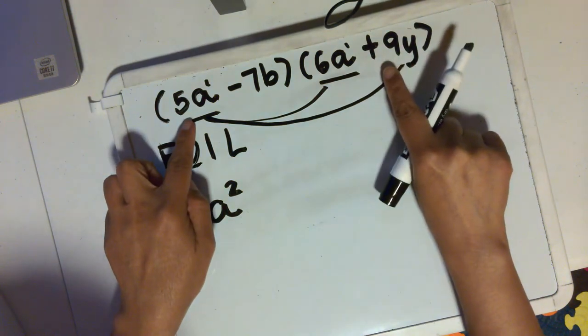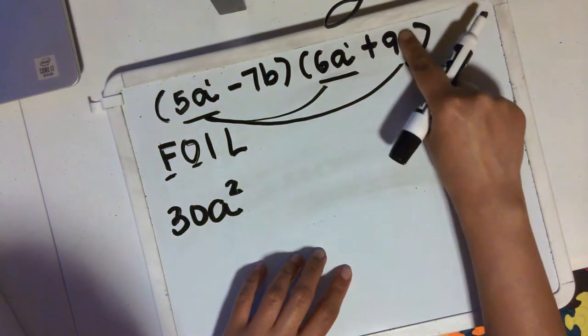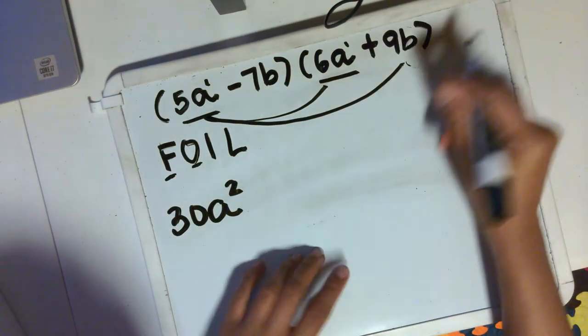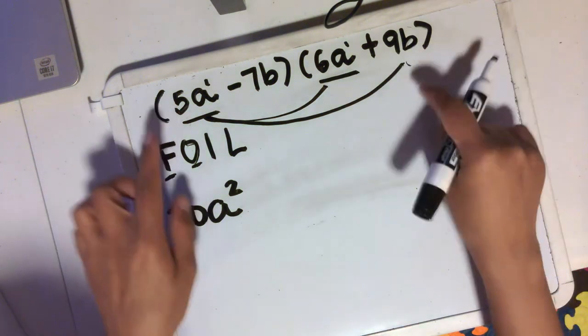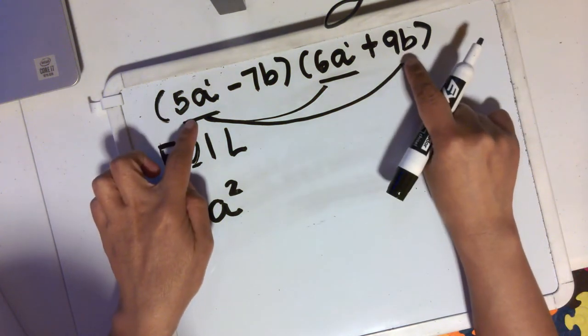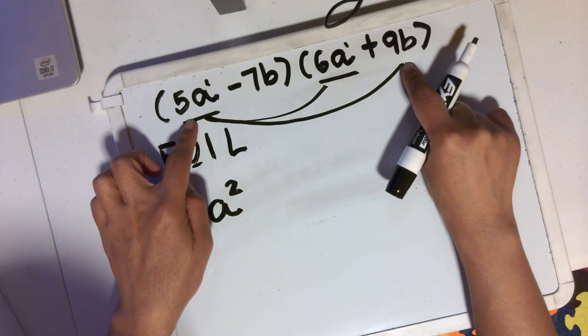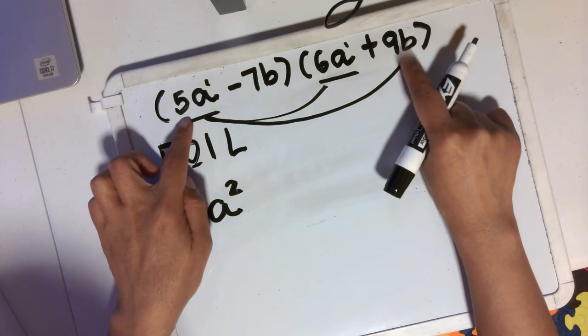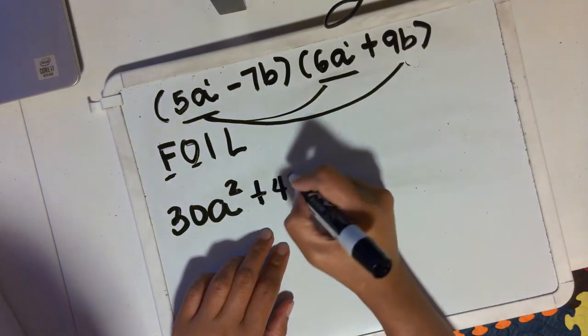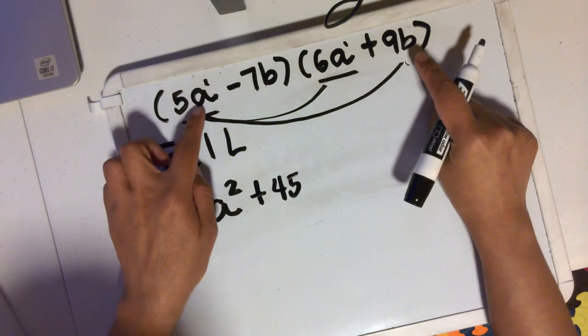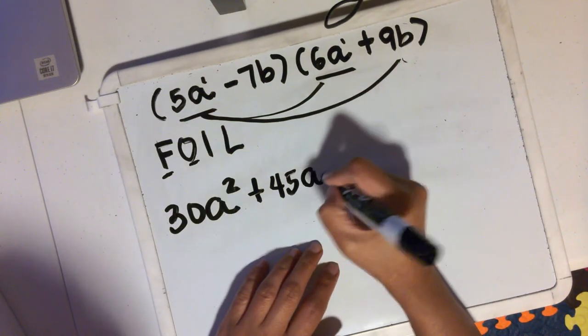So 5a plus, I'm going to change this to actually b instead of y. Just got used to using x and y. So 5a times positive 9b, that would be the same as 5 times 9, which is 45, and it's positive because both of them are positive, and a times b will just be ab.